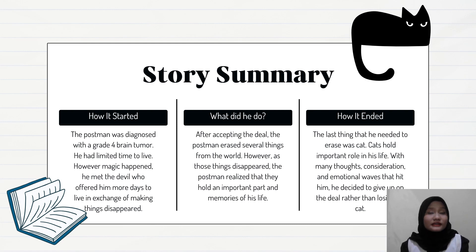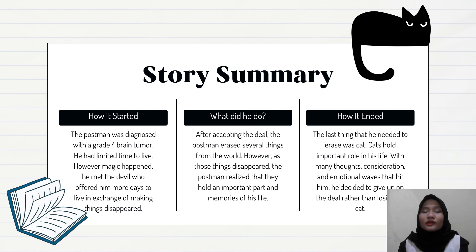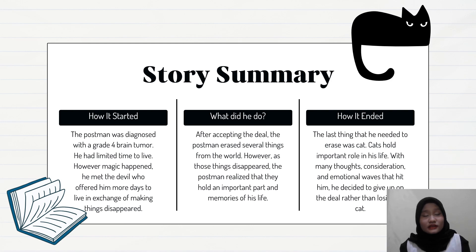After accepting the deal, the postman erased several things from the world — five things in total to gain five days to live. However, as those things disappeared, the postman realized they held an important part of his memories. He was very emotional about erasing things from the world. First he erased things like phones, clocks, and movies, and then realized they actually hold an important place in human life and his personal life, reminding him of the past — of his mom, of the cats he used to have, and all of that.